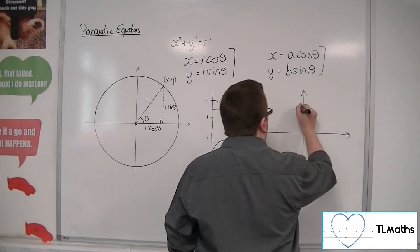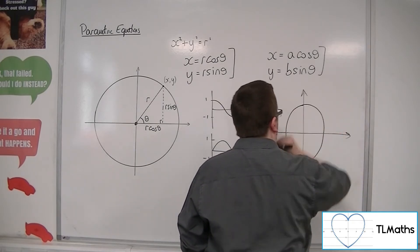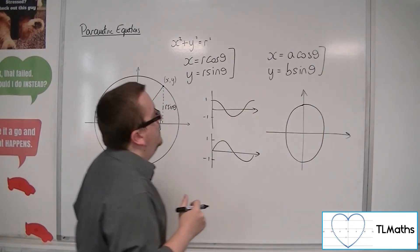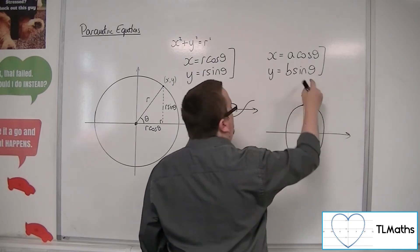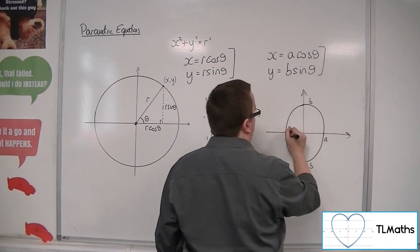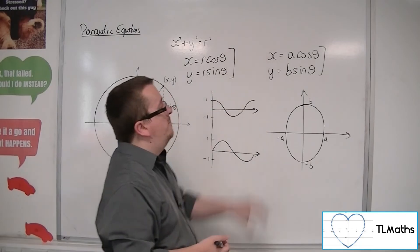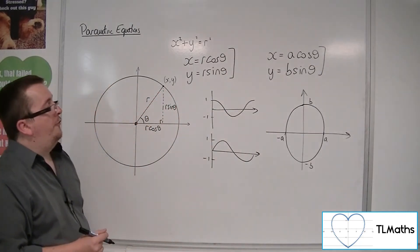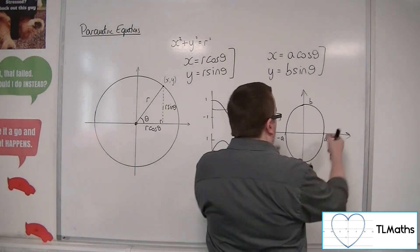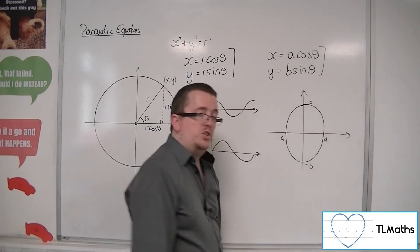So we could have something that looks like this — my ellipses aren't perfect, quite difficult to draw. y is going between minus b and b, so there's b, there's minus b, there's a, there's minus a. This pair of parametric equations defines an ellipse centred at the origin of width 2a and height 2b.